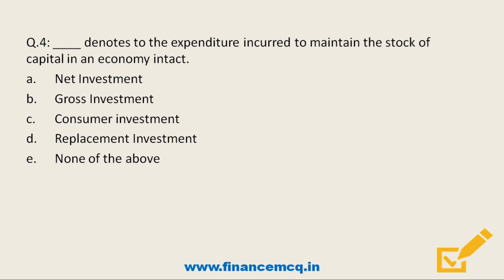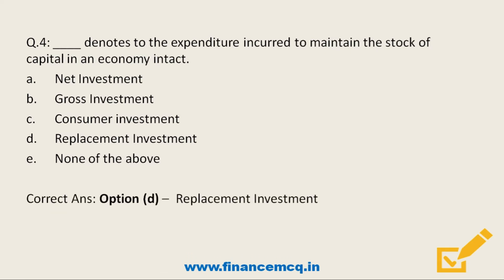Next question: Which term denotes the expenditure incurred to maintain the stock of capital in an economy intact? Option A: Net investment, Option B: Gross investment, Option C: Consumer investment, Option D: Replacement investment, Option E: None of the above. The correct answer is Option D — replacement investment.